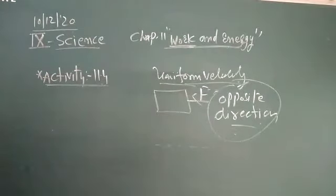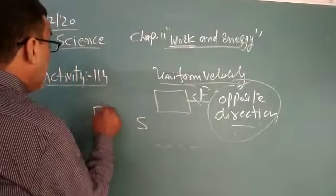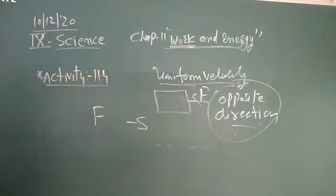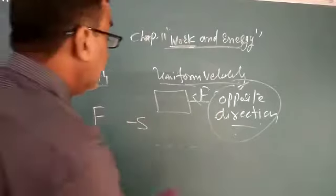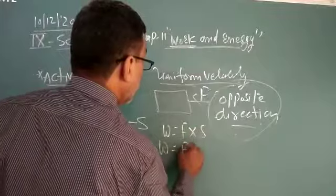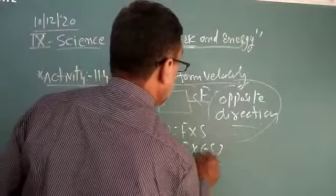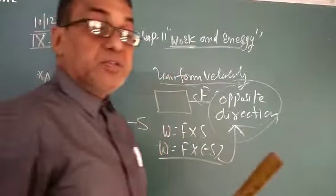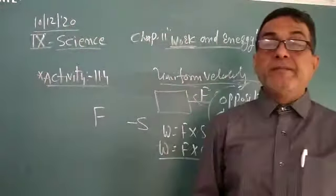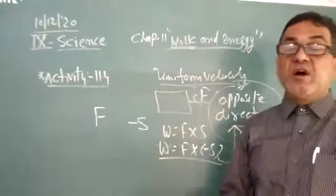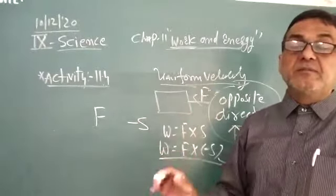In the opposite direction, displacement is negative. You know that work is equal to force into S. Therefore, work is equal to force into minus S. So if the force is applied in the opposite direction of velocity, it becomes negative, or in the same direction it becomes positive.